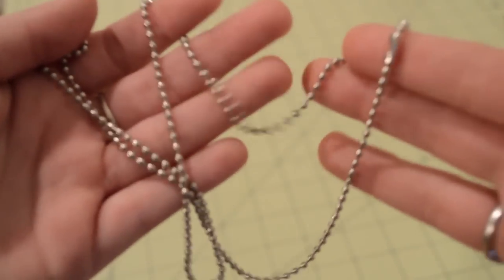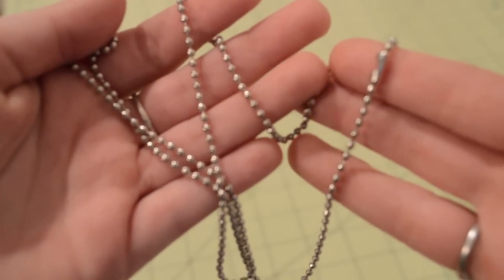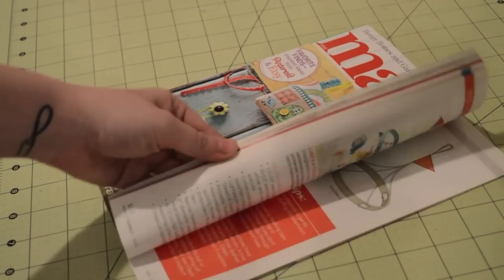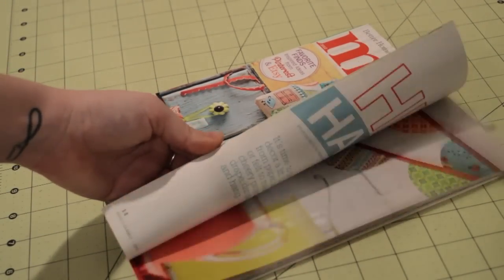And like I said, I'm putting it on a necklace, so you'll need some kind of chain. And lastly, you'll need some kind of image to be showing through the glass gem, so I'm choosing mine from this crafty magazine.